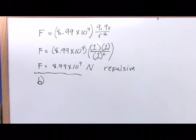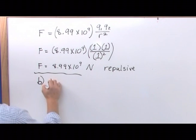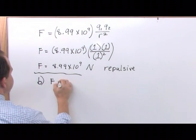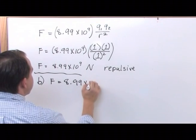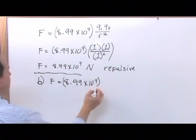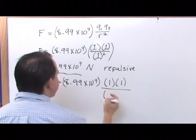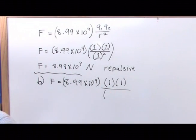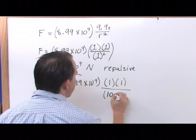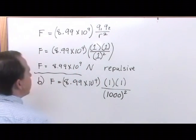Now, B is, what is the force if these guys are one kilometer apart? So, it's the same sort of thing. It's 8.99 times 10 to the 9. Charge 1 and charge 2 stay exactly the same. The only difference is the distance between them is one kilometer. But, you never want to work with kilometers. You always want to work with meters. So, it's 1,000 meters, and it's squared because it's r squared.